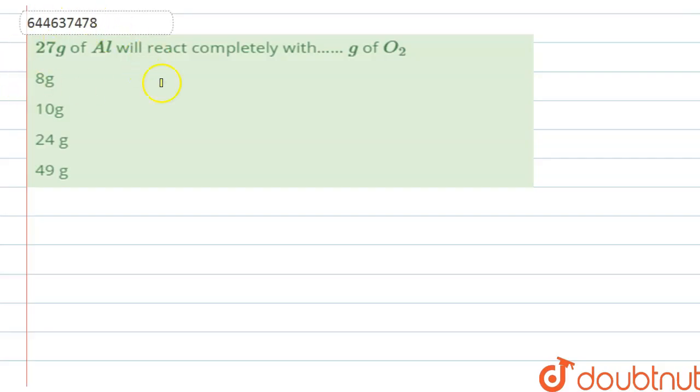Hello guys, in this question it's saying that 27 grams of aluminum will react completely with how much grams of O2. There is a reaction in which aluminum and oxygen are reacting with each other and making some product, and we have to find out how much grams of oxygen do we need.